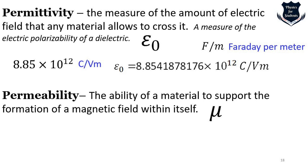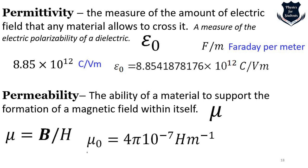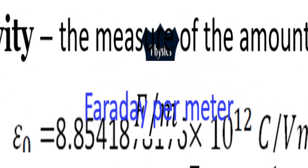Permeability is the ability of a material to support the formation of a magnetic field, denoted by the symbol mu. It was coined by Oliver Heaviside around September 1885. Permeability is denoted by mu, where B is the magnetic field. So right in front of you are two important terms: permittivity, which determines how much electric field is allowed to flow, and permeability, which is the ability of a material to support the formation of a magnetic field.